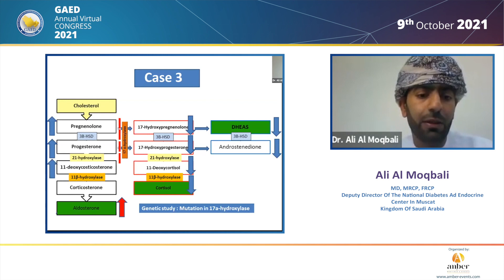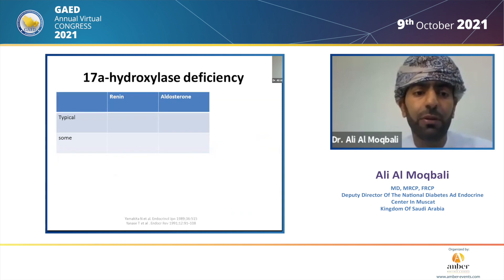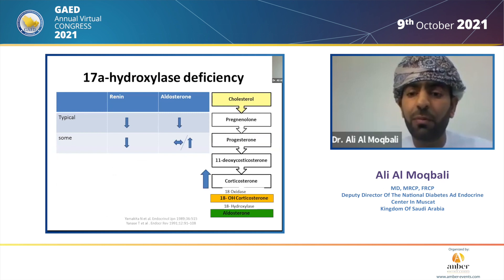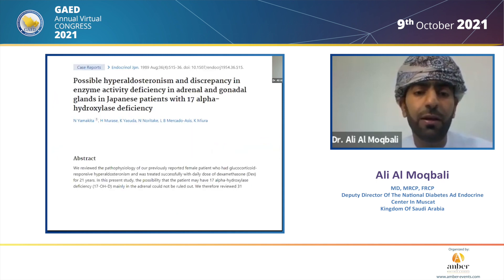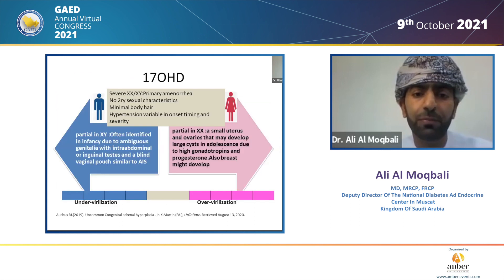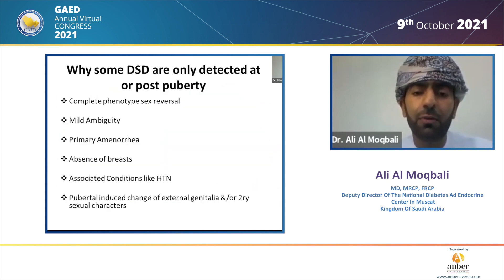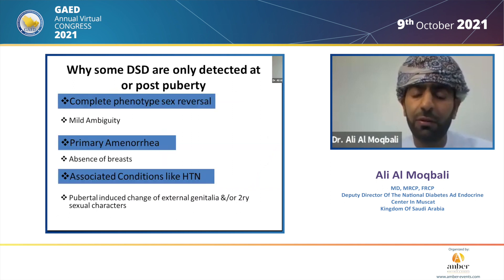We thank Dr. Ali Zahrani for doing the genetic testing. Our patient has high aldosterone, whereas typical cases have low aldosterone. When the block is so severe, there is a large amount of pre-block metabolites and corticosterone just diffuses to aldosterone — there are increasing case reports about this, especially from the Japanese group. The presentation of 17-alpha hydroxylase deficiency can be variable in males and females, and cases are not detected earlier due to these features.